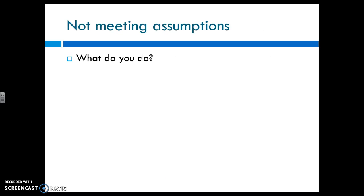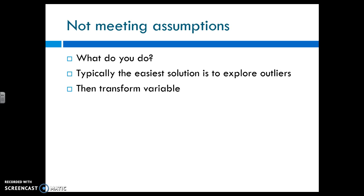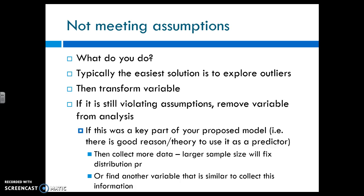If you are not meeting assumptions, so the first thing you do is check assumptions. It is the same for multiple regression. Typically, you delete outliers. Then, of course, you transform a variable. If you're still violating, then you remove that variable from the analysis. You could collect more data if you have that option, or you can get a different variable that's similar in context. So if you were studying anxiety, maybe use a different anxiety test or score.